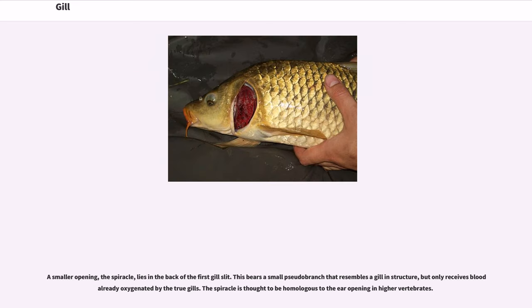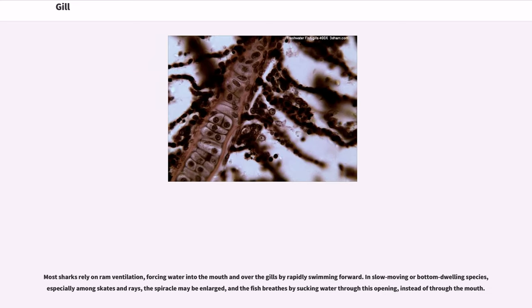A smaller opening, the spiracle, lies in the back of the first gill slit. This bears a small pseudo-branch that resembles a gill in structure, but only receives blood already oxygenated by the true gills. The spiracle is thought to be homologous to the ear opening in higher vertebrates. Most sharks rely on ram ventilation, forcing water into the mouth and over the gills by rapidly swimming forward. In slow-moving or bottom-dwelling species, especially among skates and rays, the spiracle may be enlarged, and the fish breathes by sucking water through this opening instead of through the mouth.